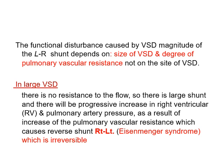With large VSD, there is no resistance to flow, so there is a large left-to-right shunt with progressive increase in right ventricular pressure, and later increased pulmonary artery pressure. Over time, increased shunt leads to increased right ventricular wall thickness and increased pulmonary vascular resistance, causing reverse shunt from right to left — a severe, progressive condition called Eisenmenger syndrome, which is irreversible. The patient cannot undergo surgery once this stage is reached.